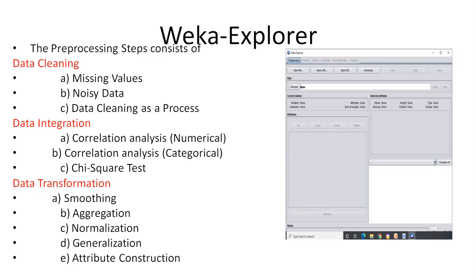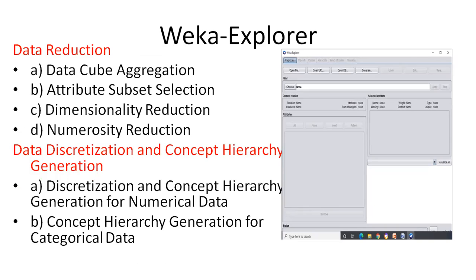Data reduction is another step in pre-processing. For data reduction you apply data cube aggregation, attribute subset selection, dimensionality reduction, and numerosity reduction. Finally, data discretization and conceptual hierarchy generation involves taking lower-level concepts and mapping them to higher-level concepts — for example, collecting data at the city level and aggregating it to the country level.